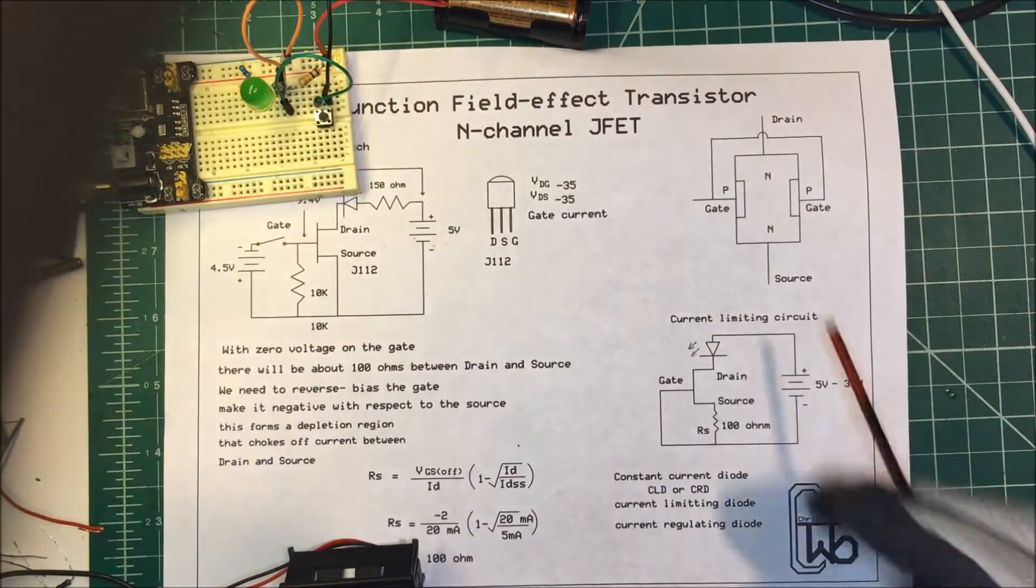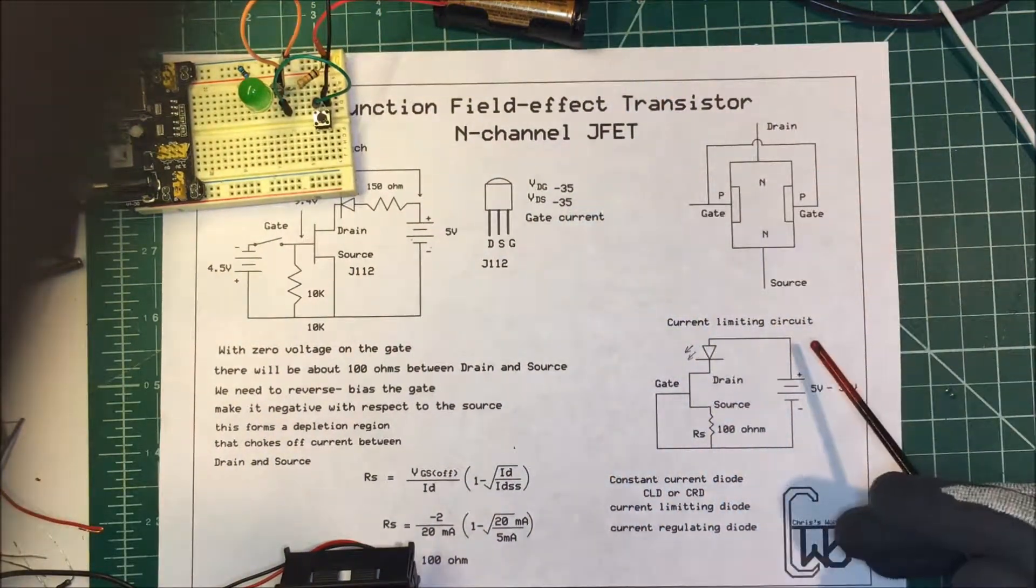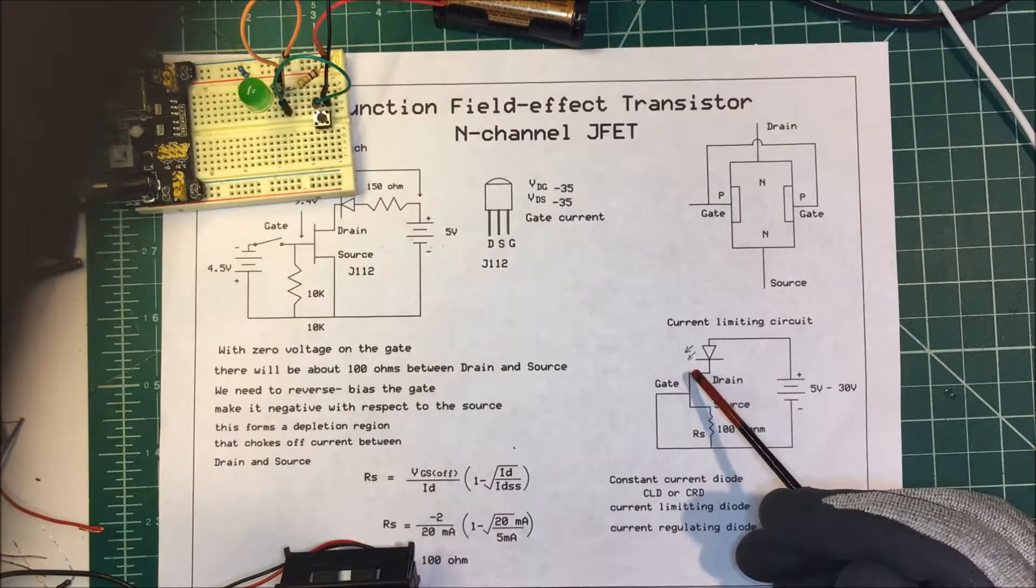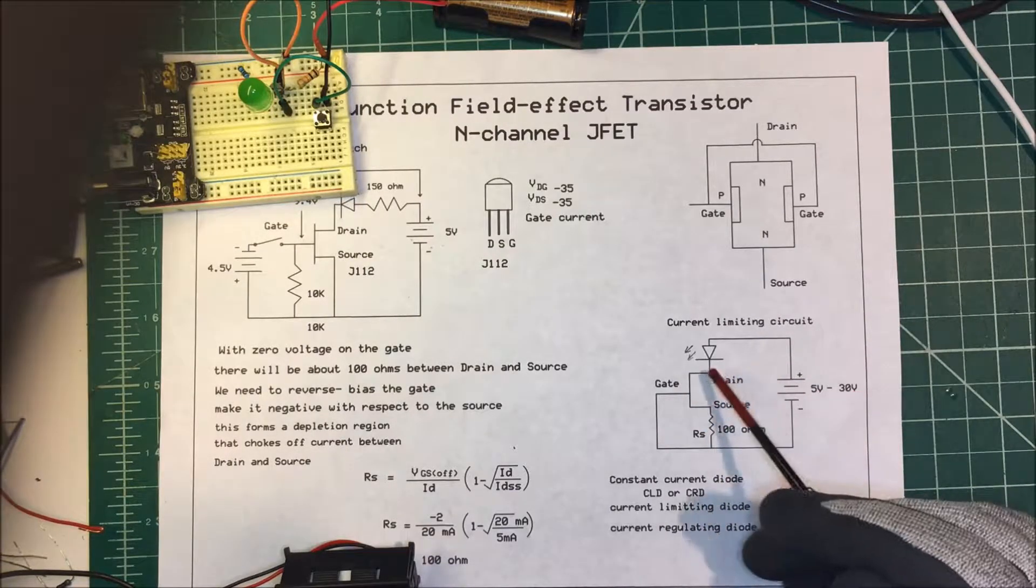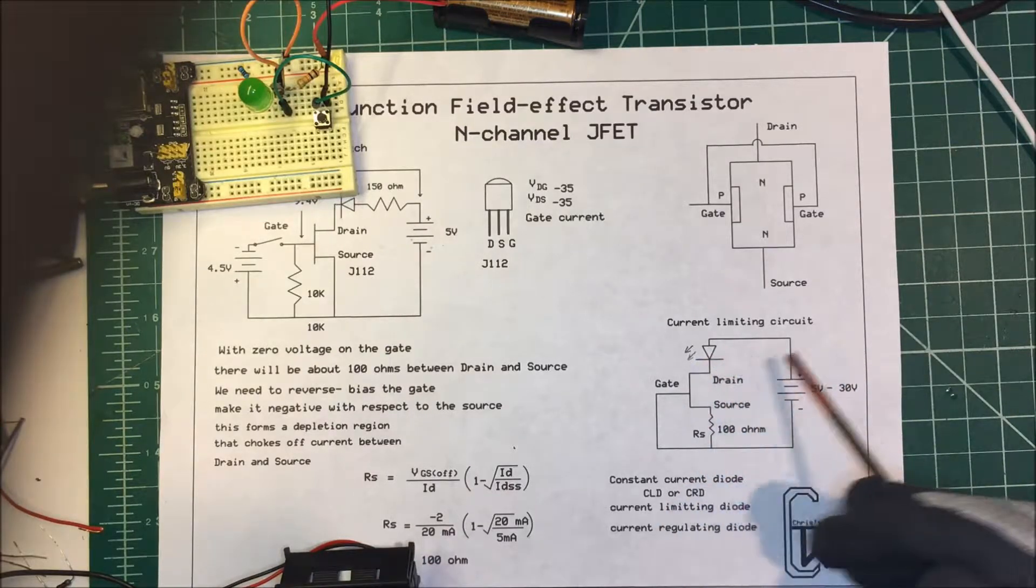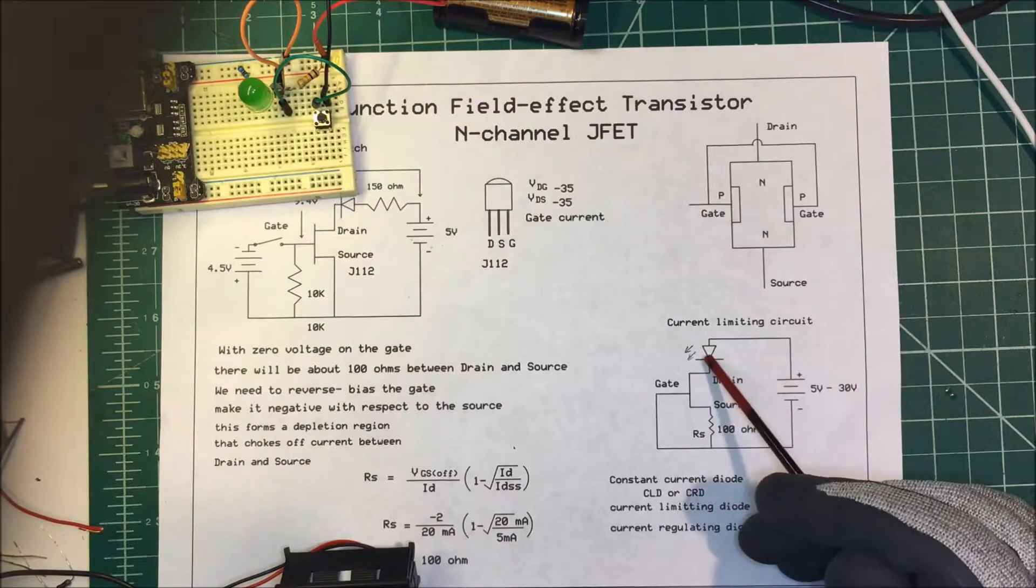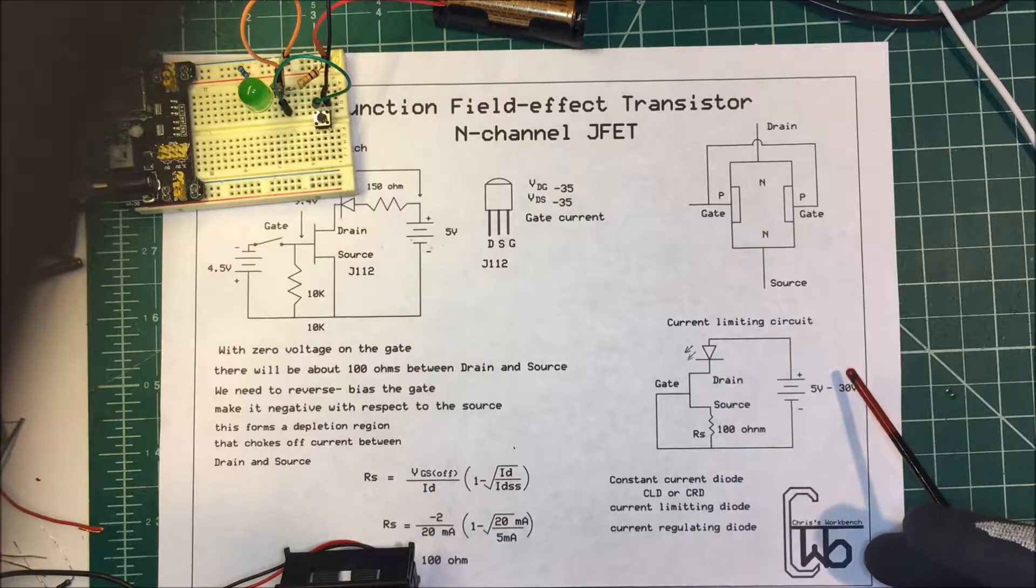What I want to use it for is for a current limiting circuit. I want to have an LED and I want to be able to run it at 5 volts up to 30 volts and I don't want to have to worry about changing the resistance or anything. I just want it to stay at the same brightness the whole time.